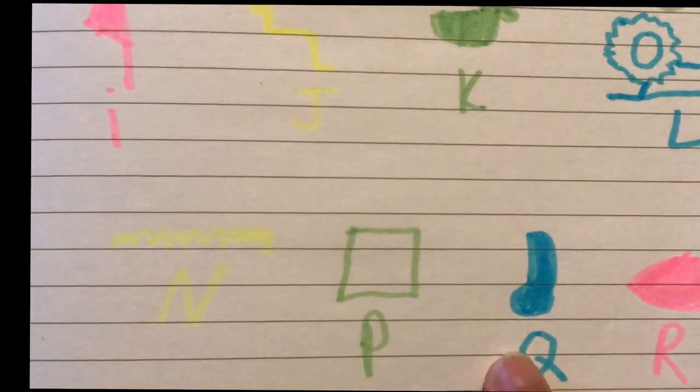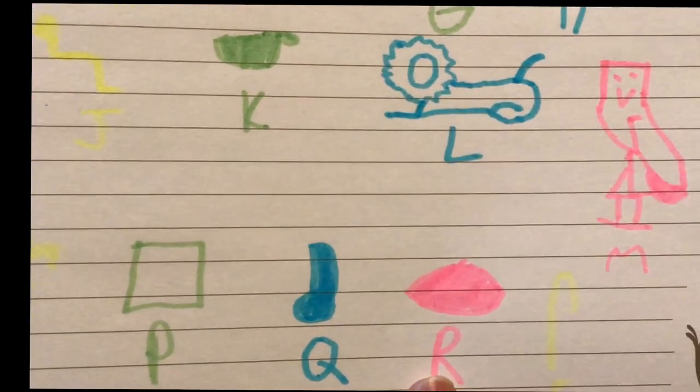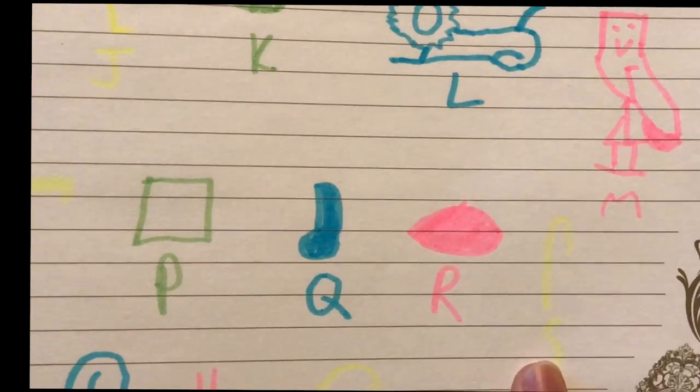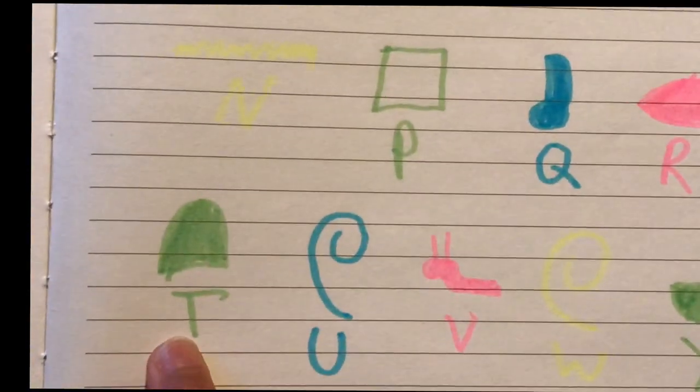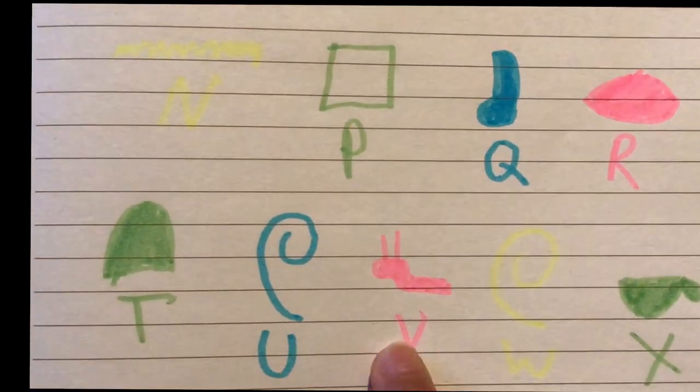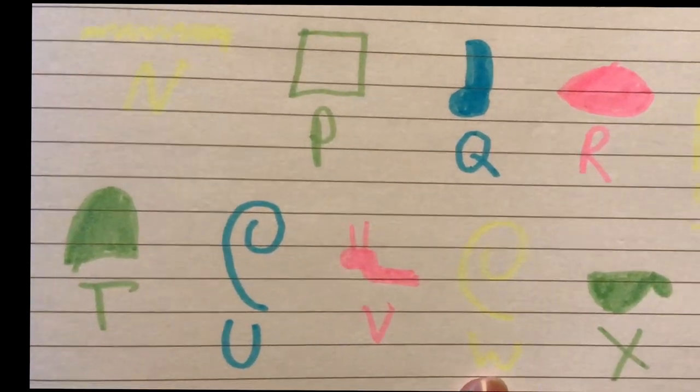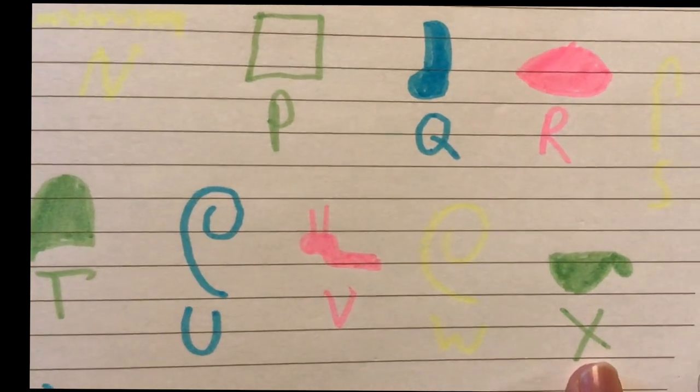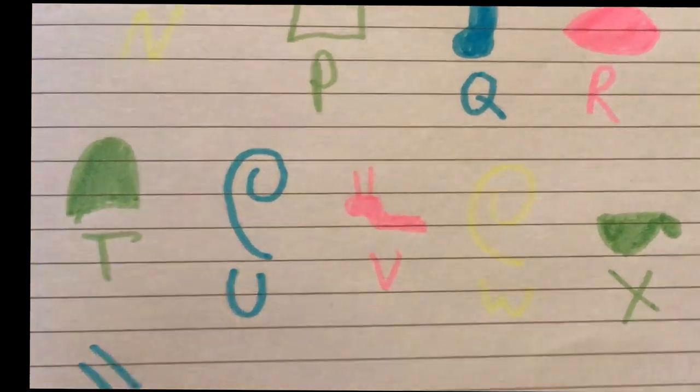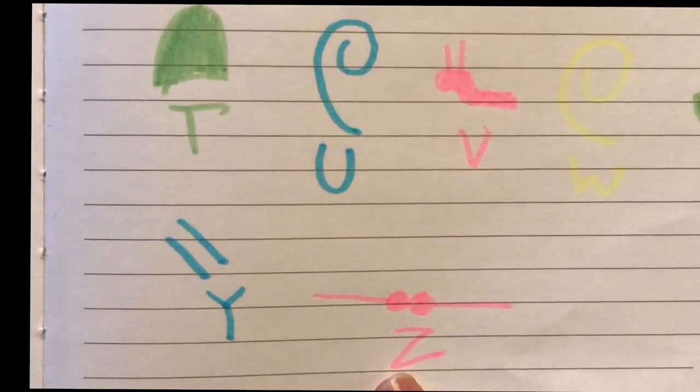P is a stand, Q is a boot, R is a mouth, S is a string, T is a hill. U is a swirl of wind, V is an insect, W is a swirl of wind, X is a pot, Y is two diagonal lines, Z is a door handle.